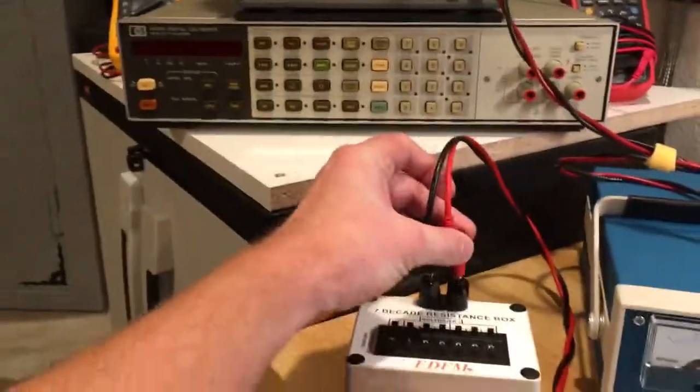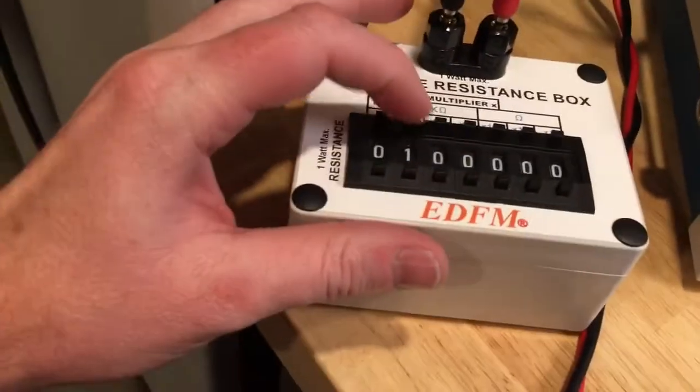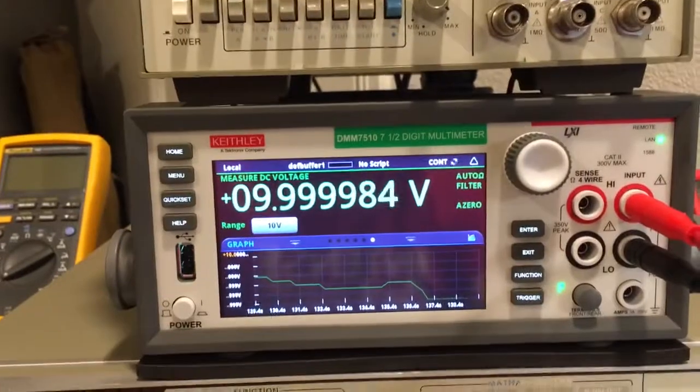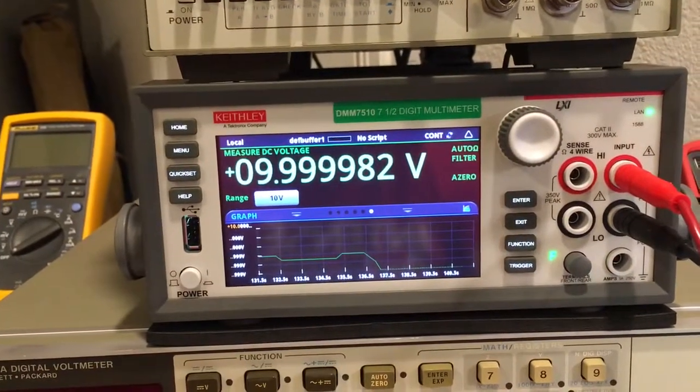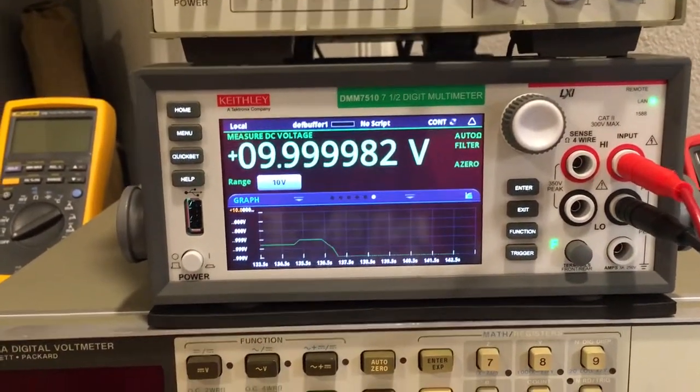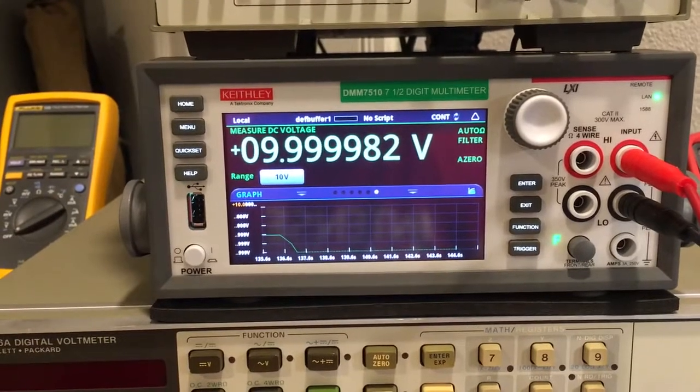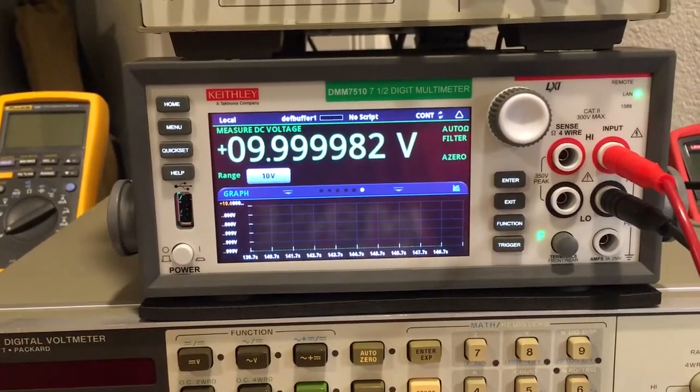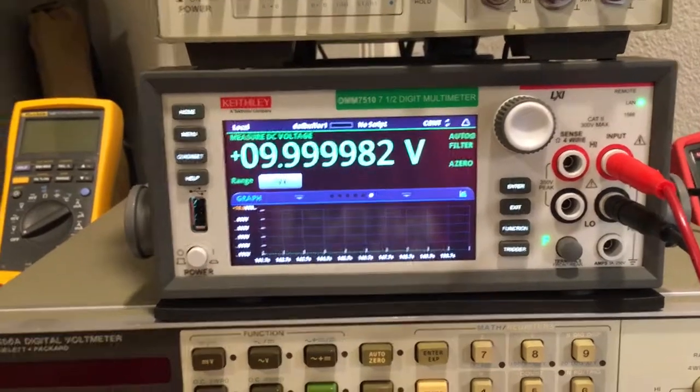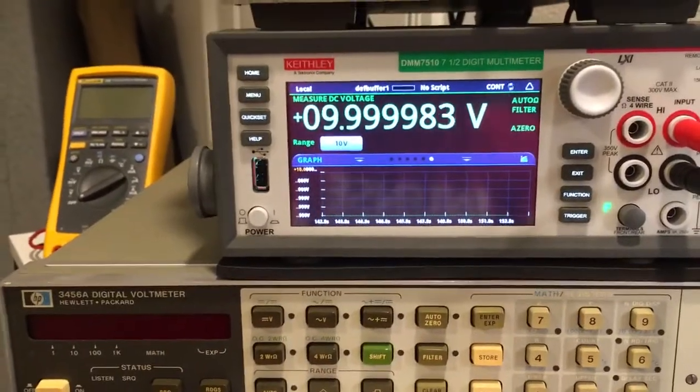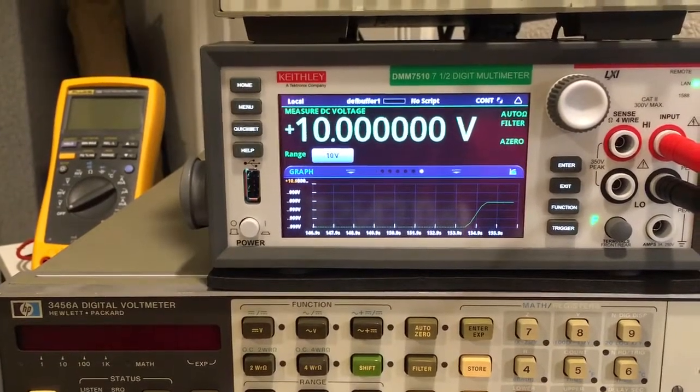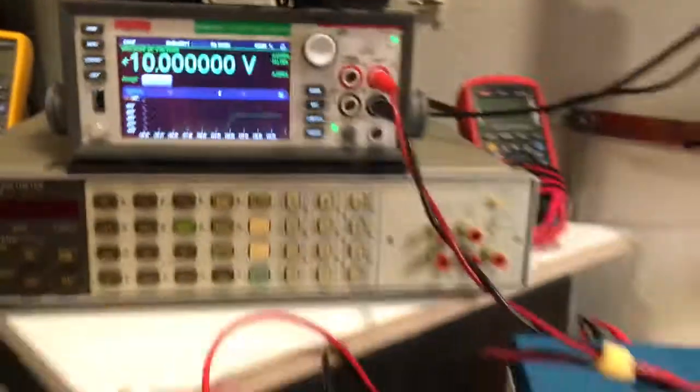Let's put a load on this thing. Let's go down to 10K. Now the 10K load, obviously, it's gonna pull down the voltage a little bit. So it pulls it down here about 20 microvolts or 2 ppm with a 10K load. If I unplug it, it comes right back.